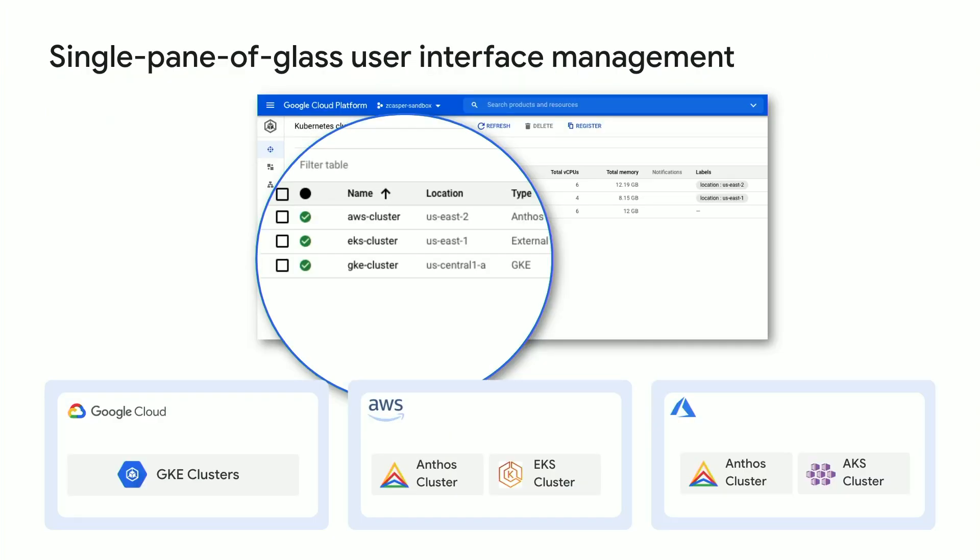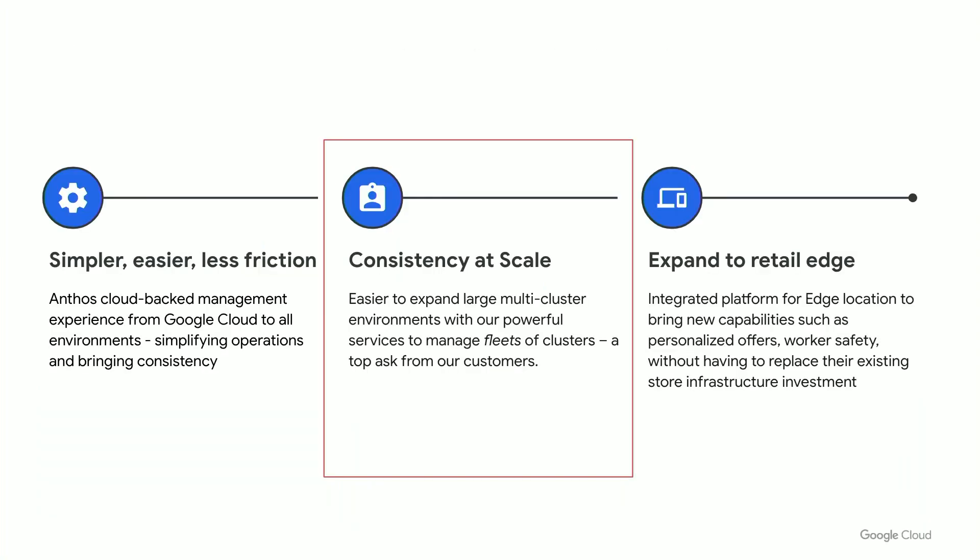Next is single pane of glass — everyone wants this, and we have it. From Anthos on GCP, you can see all your clusters no matter where they are. You can do a deeper dive into them and get better visibility. So that's enough about how we've made it simpler — let's talk about how we help you scale.